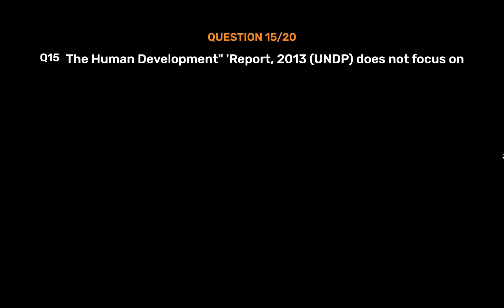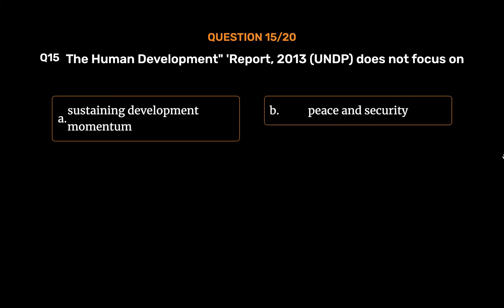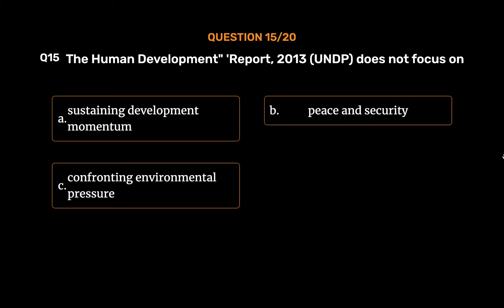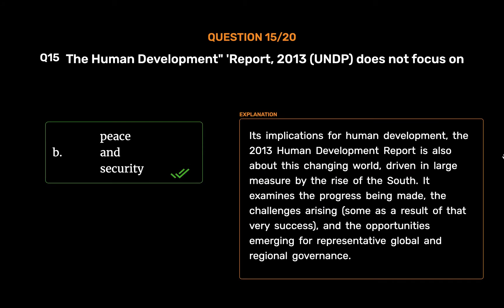Question No. 15: The Human Development Report 2013, UNDP, does not focus on: Option A, Sustaining Development Momentum; Option B, Peace and Security; Option C, Confronting Environmental Pressure; Option D, Managing Demographic Change. The correct answer is Option B, Peace and Security. The 2013 Human Development Report is about the changing world, driven in large measure by the rise of the South. It examines the progress being made, the challenges arising, and the opportunities emerging for representative global and regional governance.